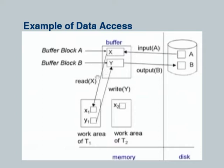If a transaction wants to read a data item X, the first step is to check if the block containing X is in the buffer. If not, it may have to input it from disk. Then it can get the value of X, copy it into its local space, and do whatever it wants there. When it is ready to write something back it does a write — but the write happens to the buffer block. If the buffer block is not there, the buffer manager will first fetch it. The write is to the buffer manager; there is no guarantee it has gone to disk yet.